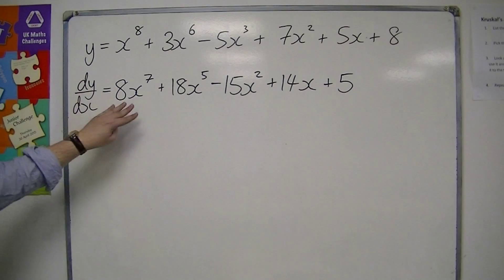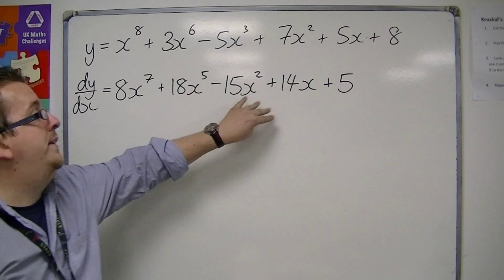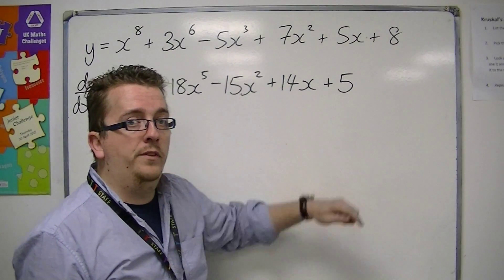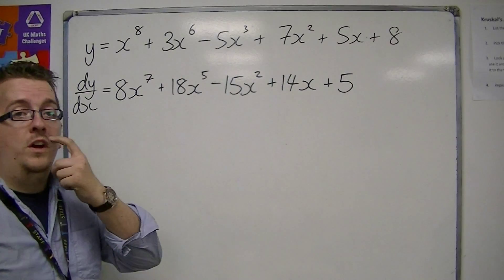So you end up with 8x to the 7 plus 18x to the 5, take away 15x squared plus 14x plus 5. And that is how you can differentiate a polynomial of any size.